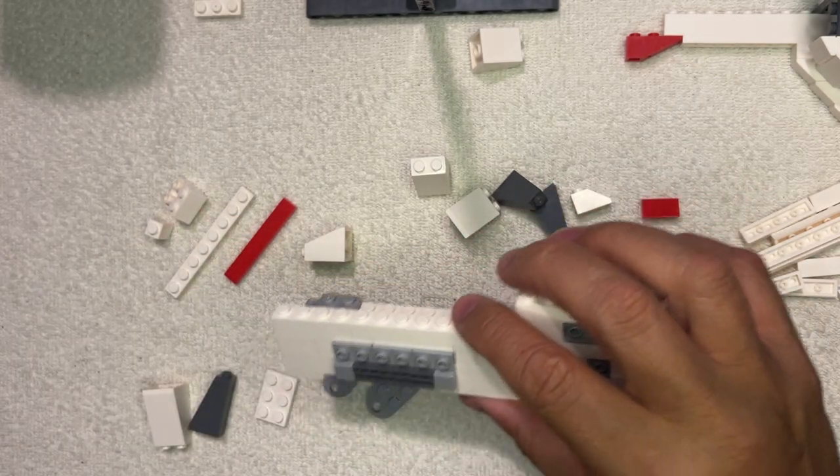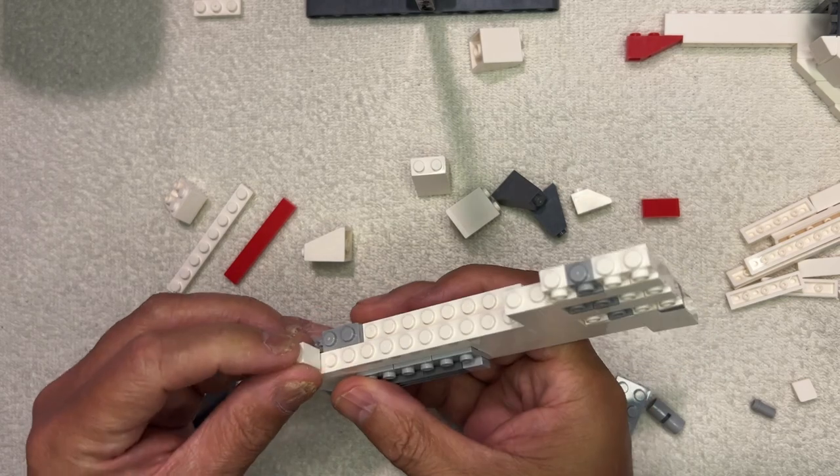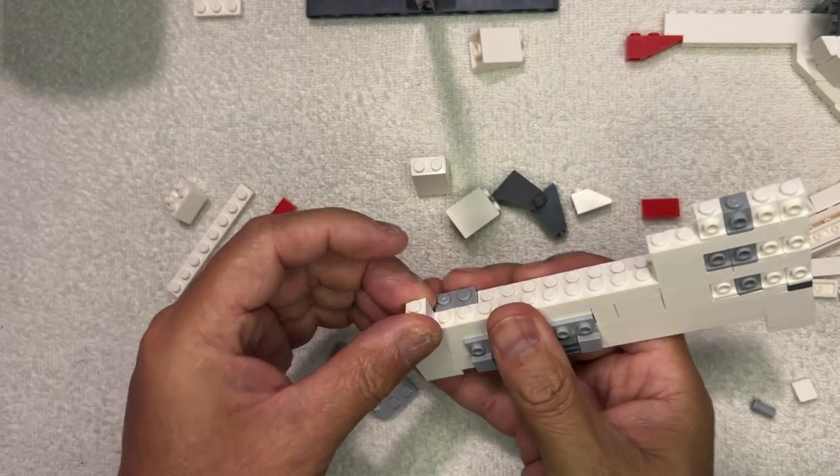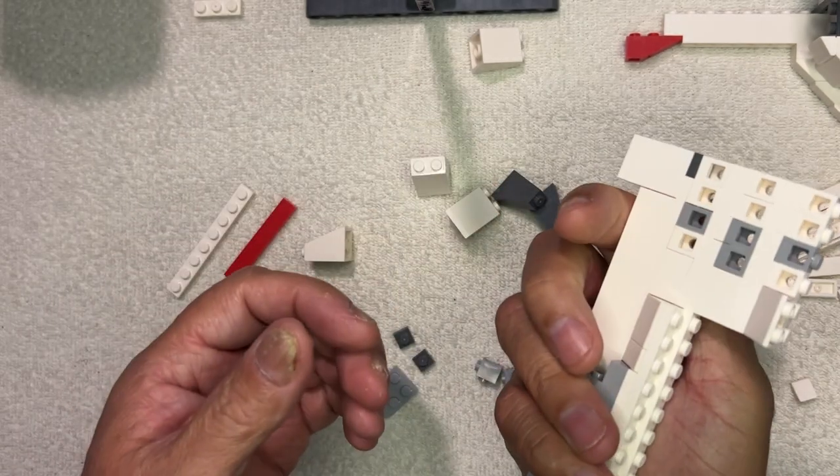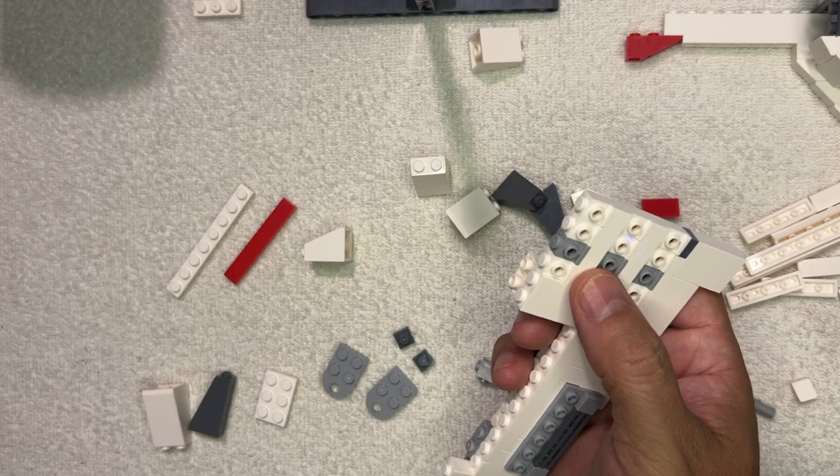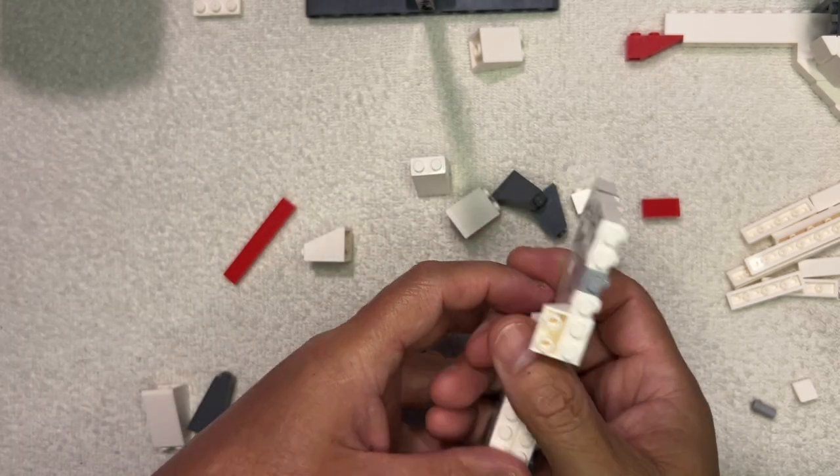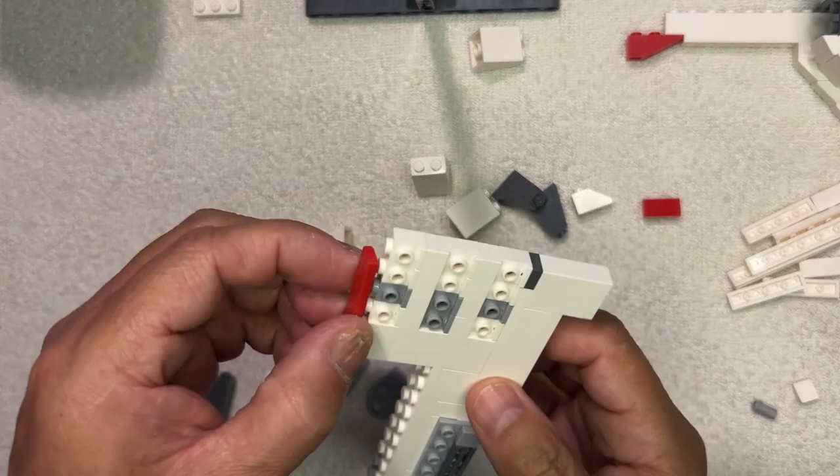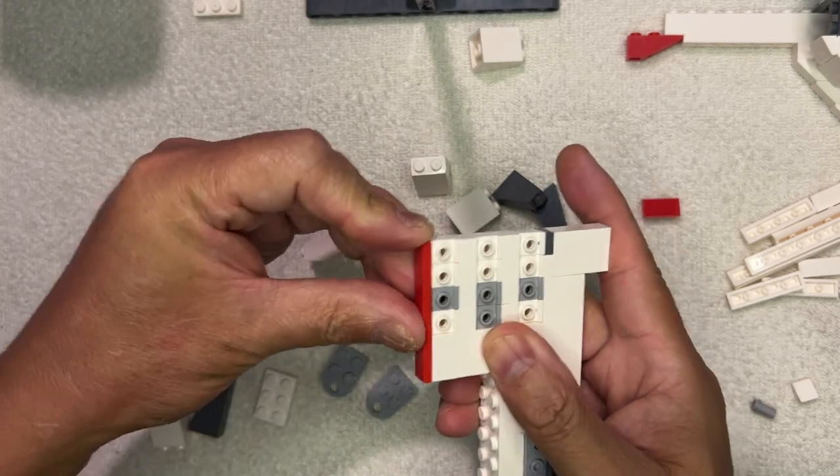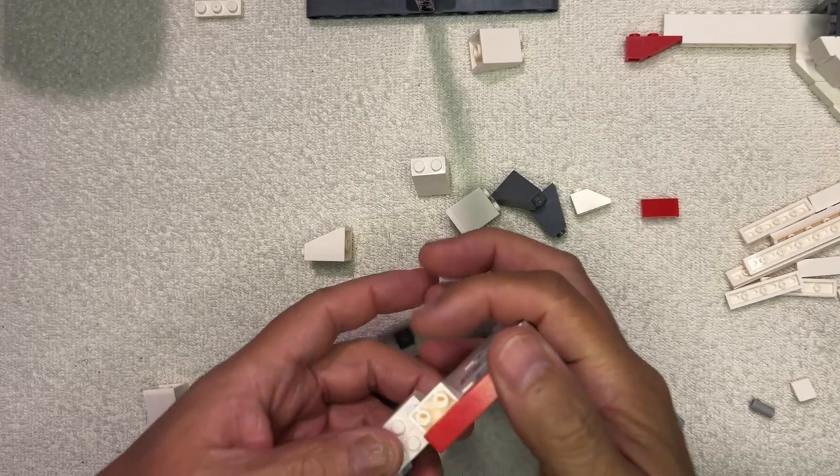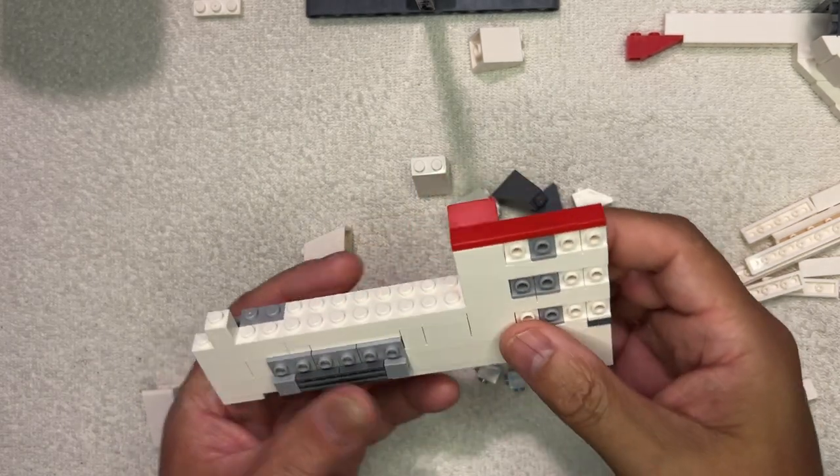Alrighty then. We have this goes here like that, this one goes here like that. And then this goes here like that, and there's this piece which goes across the top of here like that. Okay, and then this part goes here like this.